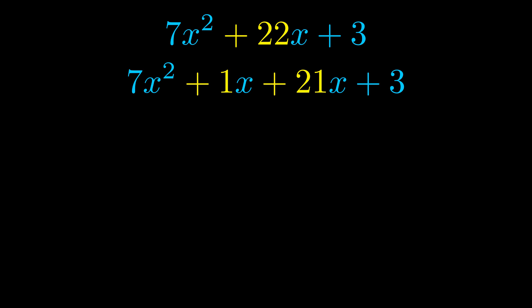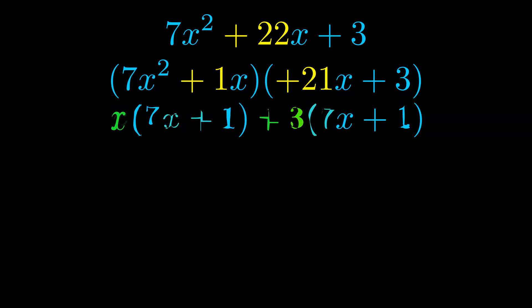Once we've done this we go ahead and we put parentheses around the first term and the last term. And we do that so that we can take the greatest common factor out of both terms. We can see the greatest common factor is now outside in green.